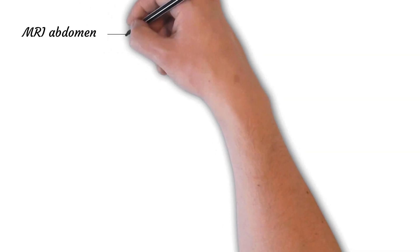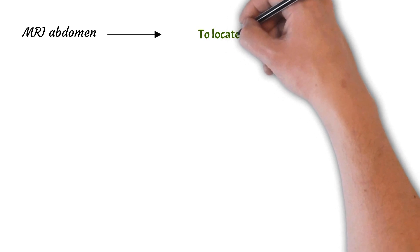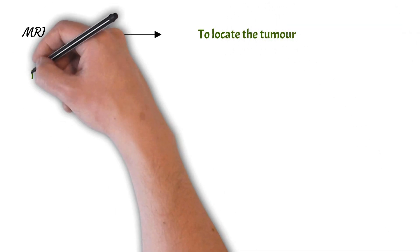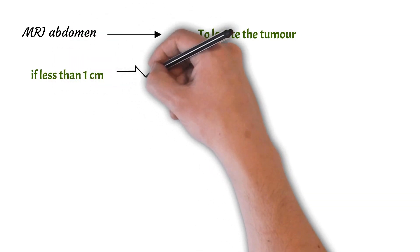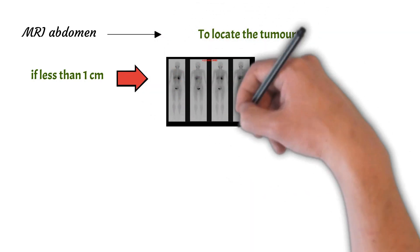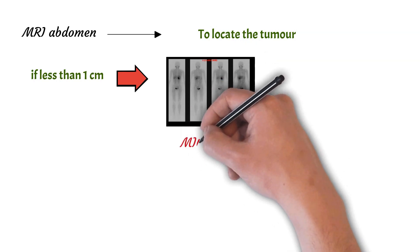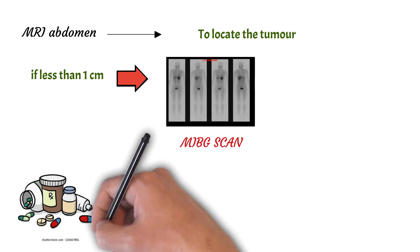We can also do certain radiological tests - MRI abdomen can be done to locate the tumor. If the size of the tumor is less than one centimeter, we can do an MIBG scan, in which guanethidine is taken up by the chromaffin cells and detected by the gamma camera.